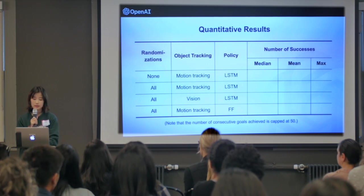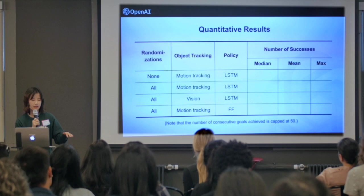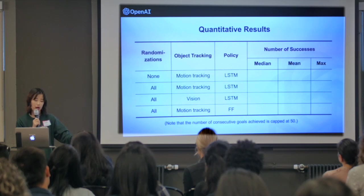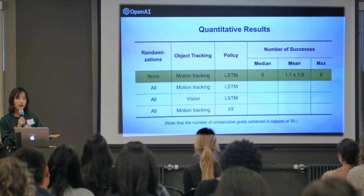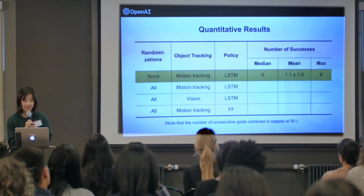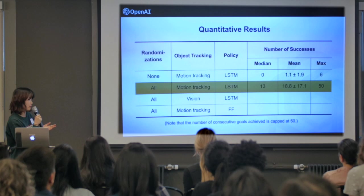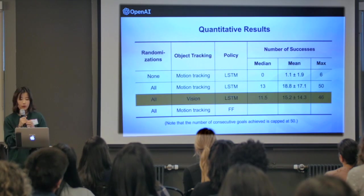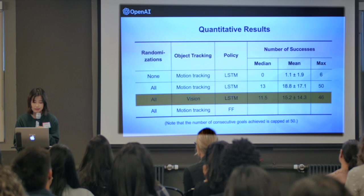Let's look at some numbers. To compare different model versions, we deploy on the real robot and count how many successes the policy achieves up to 50 before dropping the block or timing out. First, a model with no randomization at all: it got perfect performance in simulation, but zero success median on the real robot — super bad. Adding domain randomization made the policy much better, achieving a median of 13 successes with a maximum of 50. Then using RGB cameras and our vision model to track objects, the performance only dropped slightly — still very good.